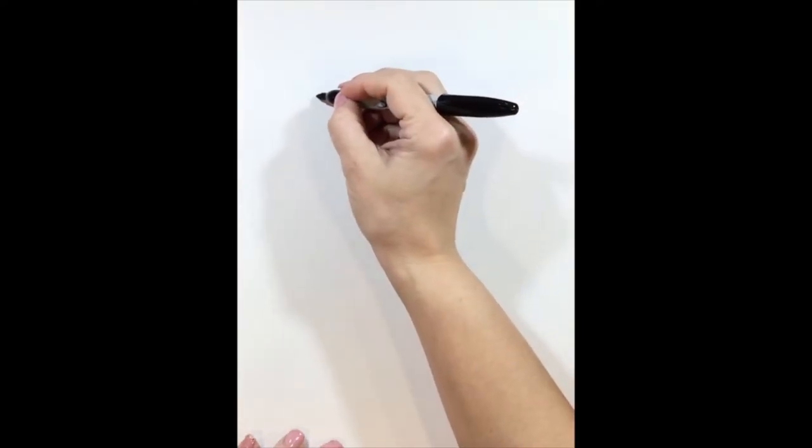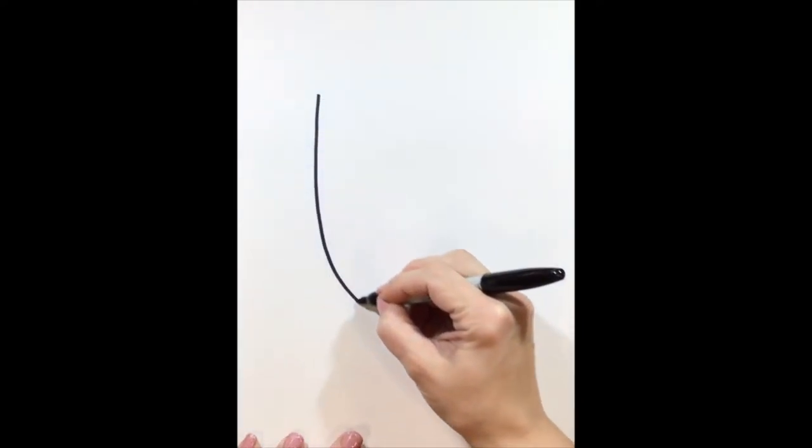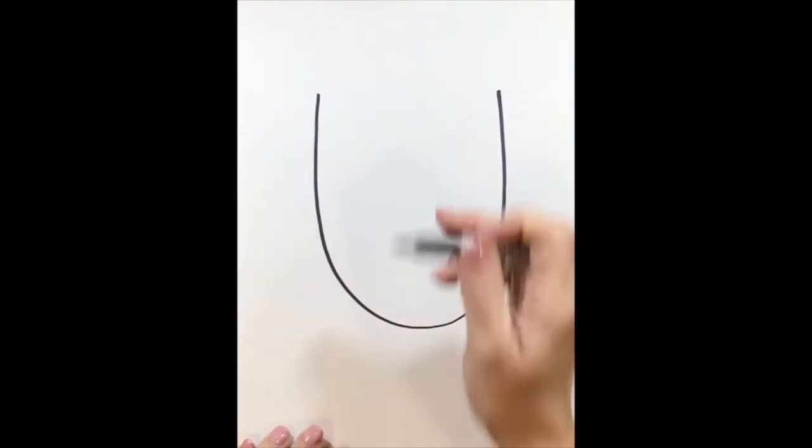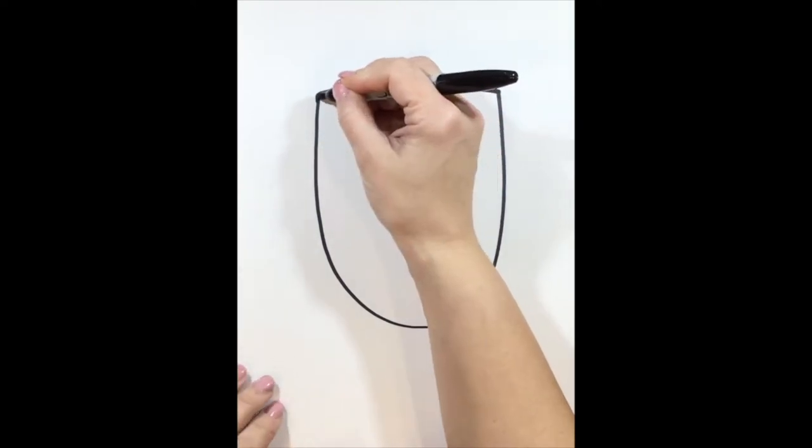Step one, we are going to draw the body of the owl. It is going to be a big U shape and we want to put it towards the center of the area of our paper. So you're going to go down, around, and up. Make sure that you leave some space on the top, on the bottom, and on the sides. Now you're going to draw a line straight across the top to finish off the body of the owl.